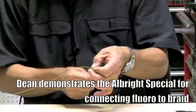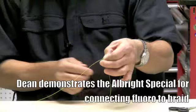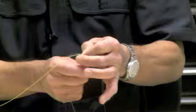Okay, the knot we're going to use for demonstration purposes is the Albright special and you start by doubling your fluorocarbon, bringing the braid through the loop and winding back down 10 times.